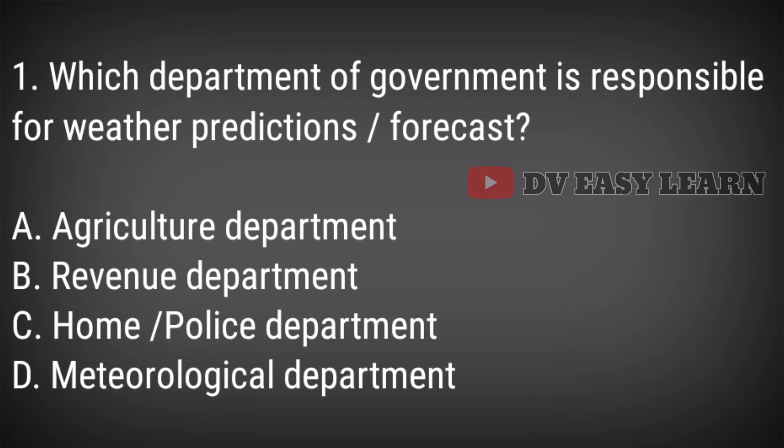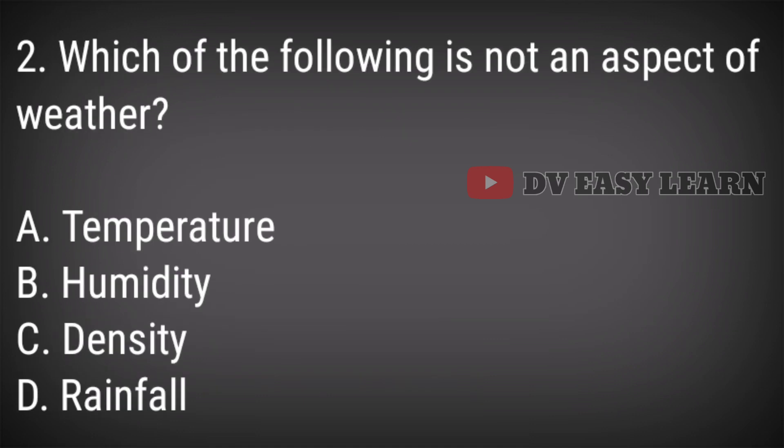Question 1: Which department of government is responsible for weather predictions or forecast? Answer: Meteorological Department. Question 2: Which of the following is not an aspect of weather? Answer: Density.